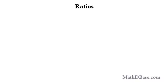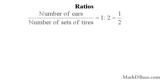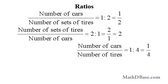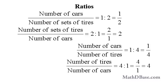How a ratio is stated can give it a completely different meaning. For example, if you have two cars and two sets of tires for each car, you have two cars and eight tires. The ratio of cars to sets of tires is 1 to 2, or one-half. But the ratio of sets of tires to cars is 2 to 1, or 2. The ratio of cars to tires is 2 to 8, or 1 to 4, while the ratio of tires to cars is 8 to 2, or 4 to 1, which equals 4.